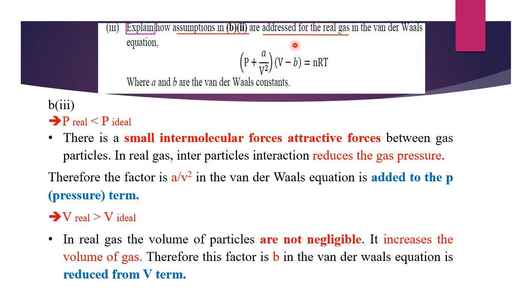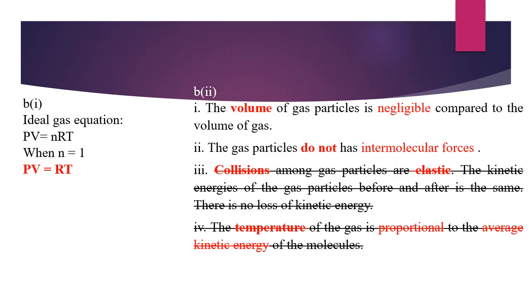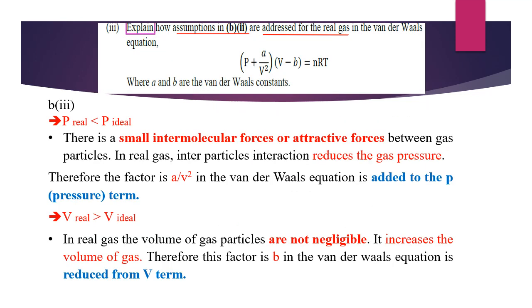Three, explain how assumptions in B2 are addressed for the real gas in terms of Van der Waals equation, where A and B are the Van der Waals constants. So based on this B3 question, just now we mentioned there are four assumptions. Ignore the assumptions for number three and number four. Because according to the Van der Waals equation, we just consider the volume and intermolecular forces. That's why for question part B, only two assumptions are acceptable. You have to remember there are four assumptions for the ideal gas equation. Explain how assumptions in B2 are addressed.